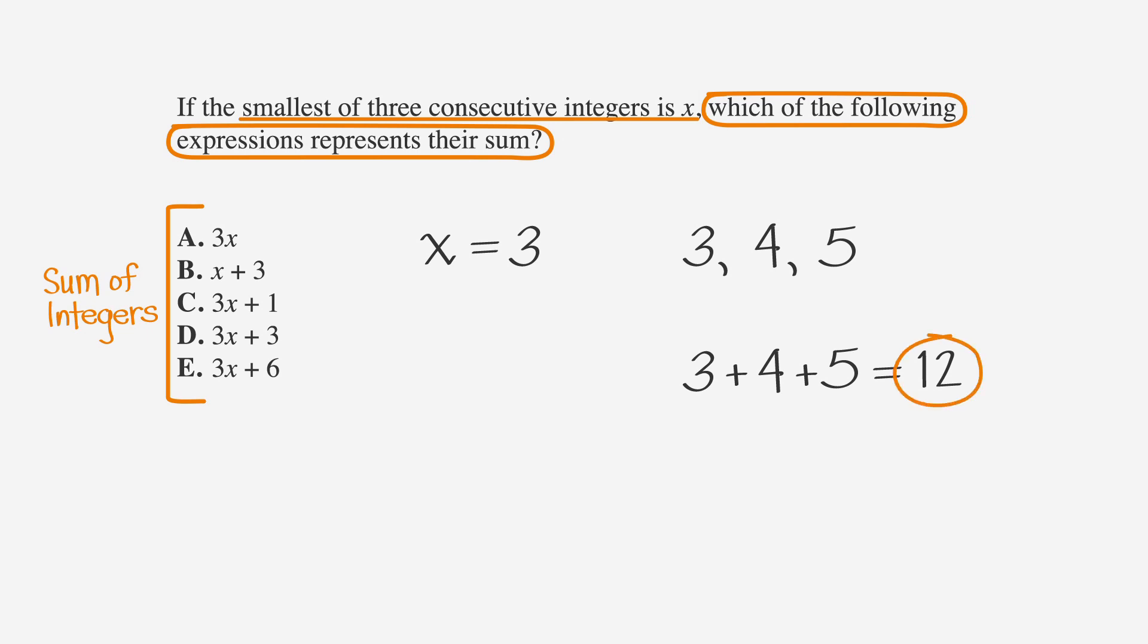Now, if we plug in x equals 3 into each answer choice, we get that answer choice A is 9, which doesn't work. B is 6, which also doesn't work. C turns out to be 10, which still doesn't work. D does match, since 3 times 3 plus 3 is 12. Just to be sure, we'll try E. 3 times 3 plus 6 equals 15. That doesn't work. So D it is. You get a shiny trophy for that one.